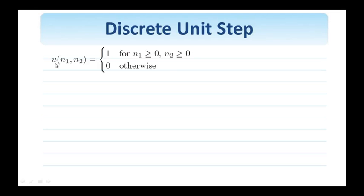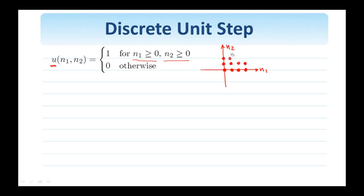Another useful function is the discrete unit step, denoted u(n1, n2). By definition it is equal to 1 as long as both arguments are non-negative: n1 greater than or equal to 0 and n2 greater than or equal to 0, and 0 otherwise. Sketching it: the signal has value 1 at all points where n1 ≥ 0 and n2 ≥ 0, extending from 0 to infinity in the n1 direction and 0 to infinity in the n2 direction.